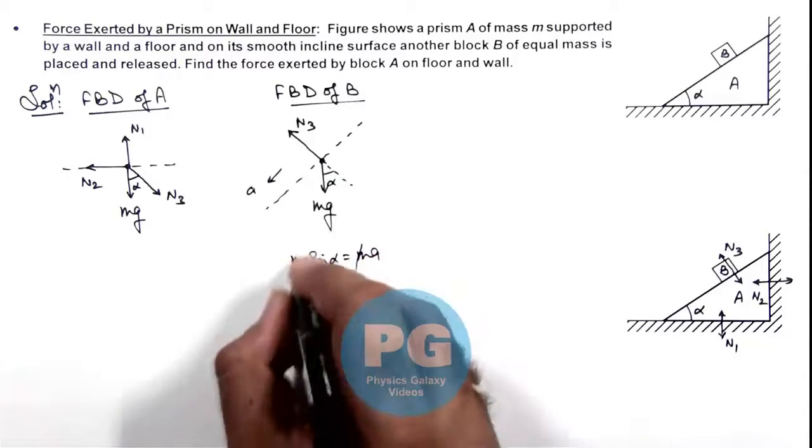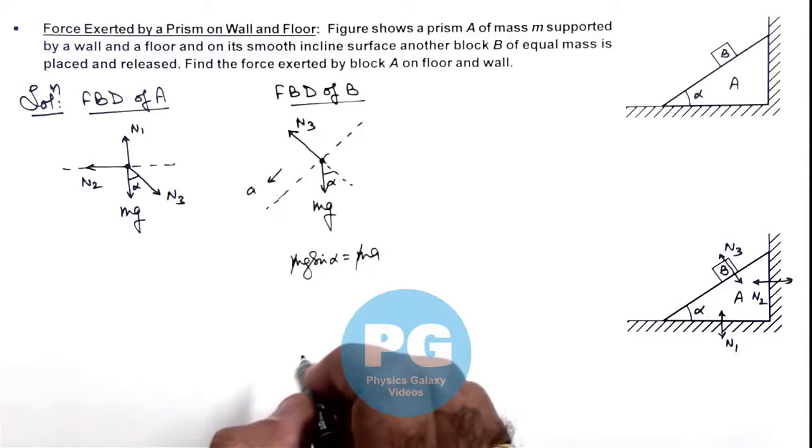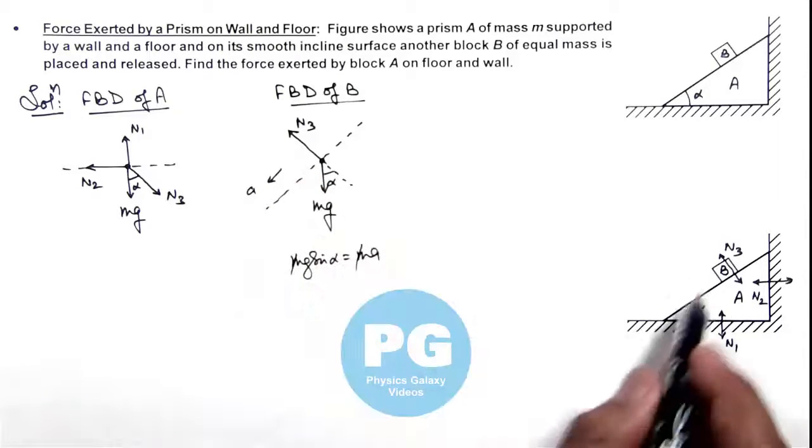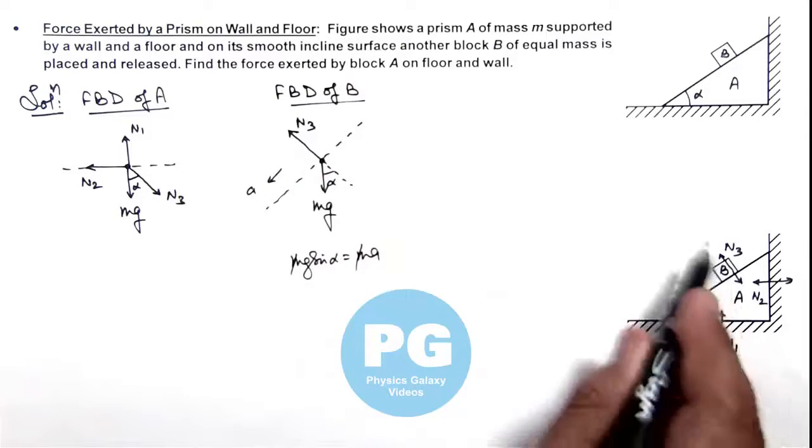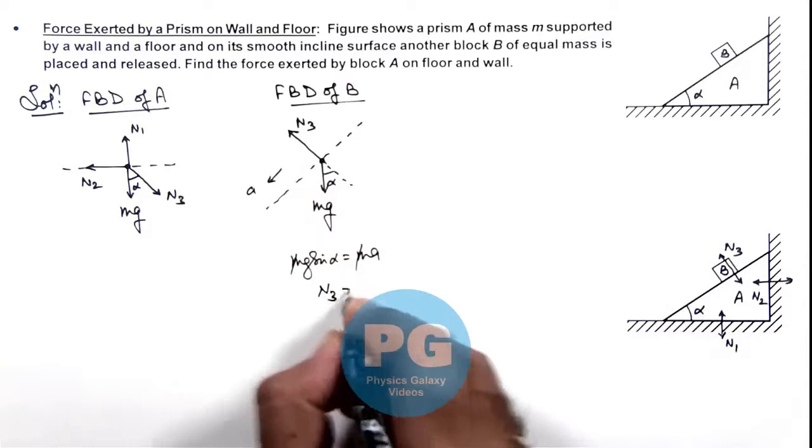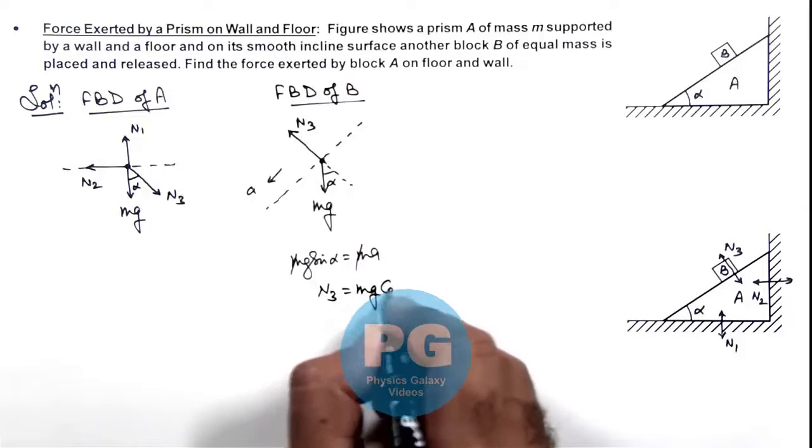So the acceleration of block we are directly getting as g sine alpha. And in normal direction if we write the equation of motion, it is not sliding so we can write here N3 is equal to mg cos alpha.